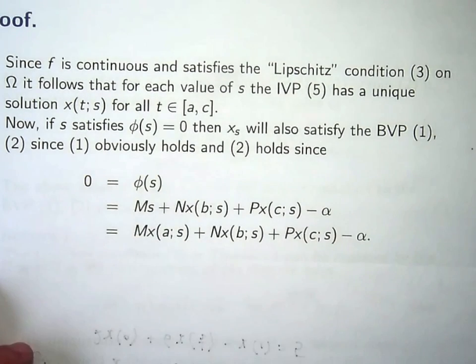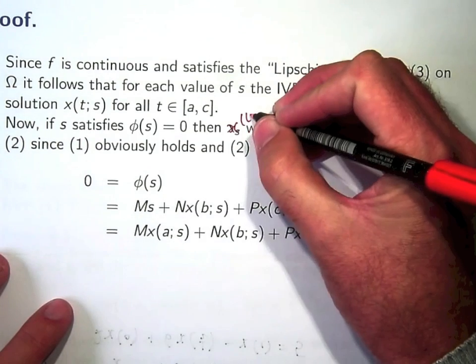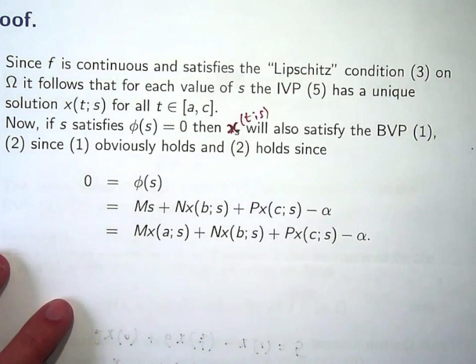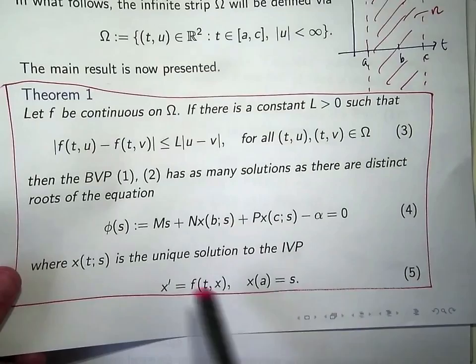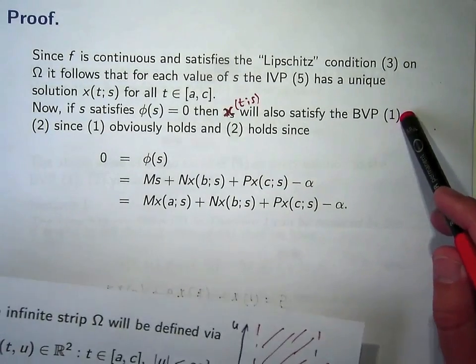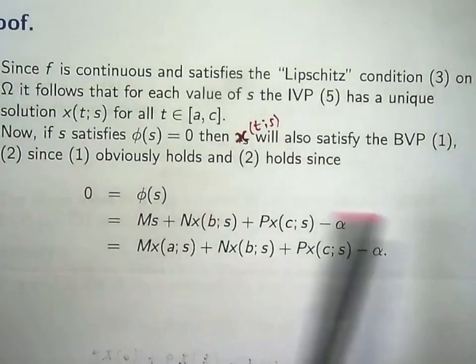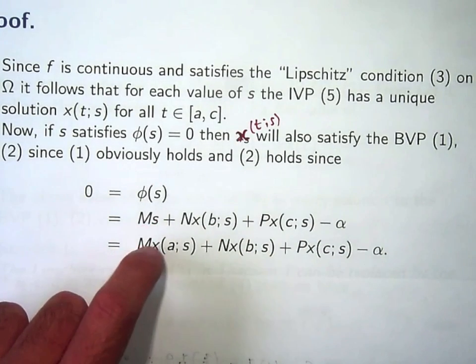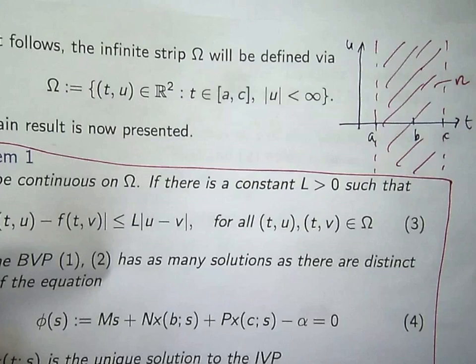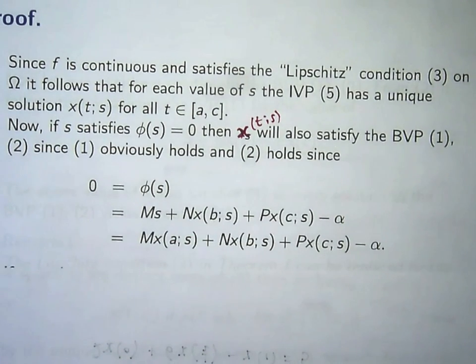We're going to prove this in two parts. Firstly, if s satisfies the equation 4, then x will also satisfy the boundary value problem 1, 2. Why is that true? Well, the differential equation is the same as in the boundary value problem, so this is certainly 1 satisfied. And all we need to show is that 2 satisfies, the boundary conditions are satisfied. Let's start with this. And we know by definition it's here. And if we just replace s with x(a; s), then from here we get the boundary conditions 2 holding.